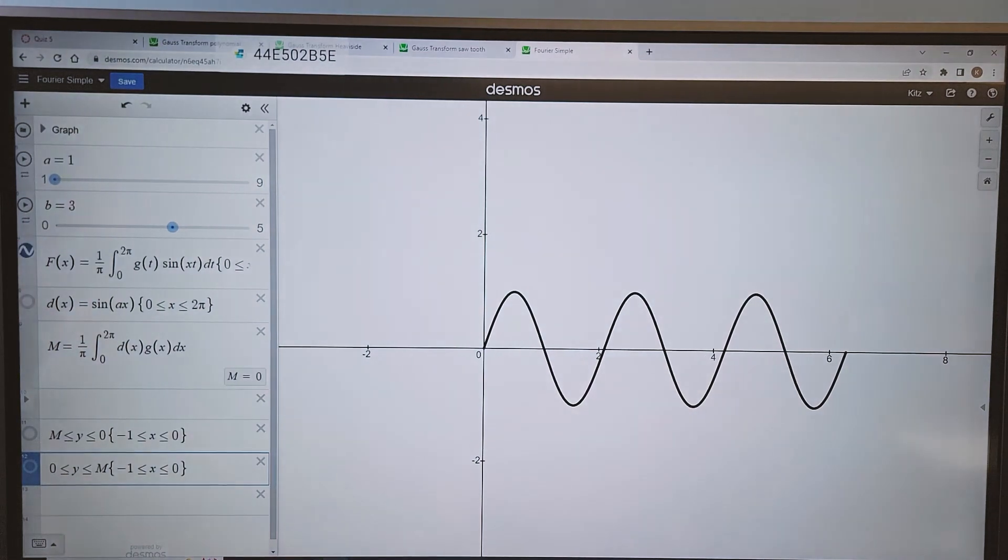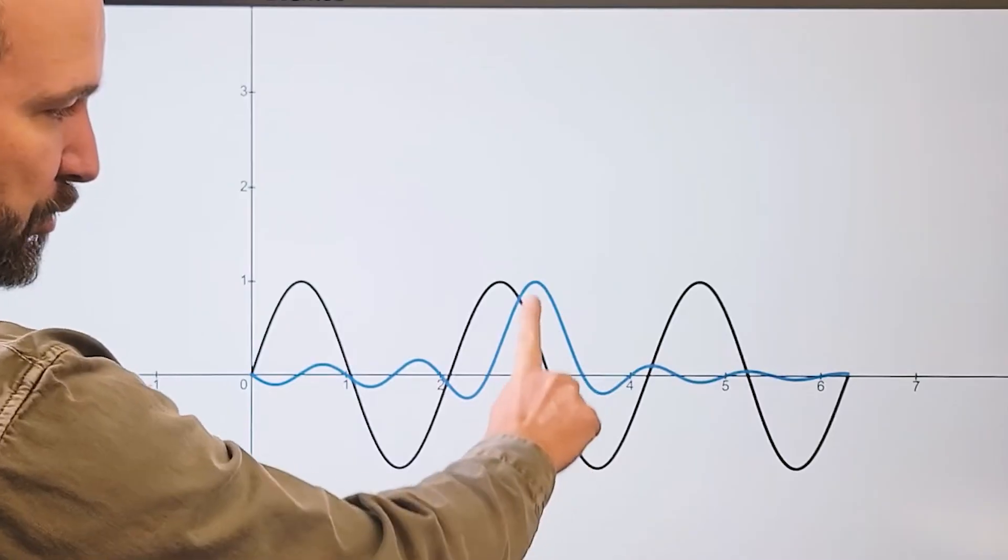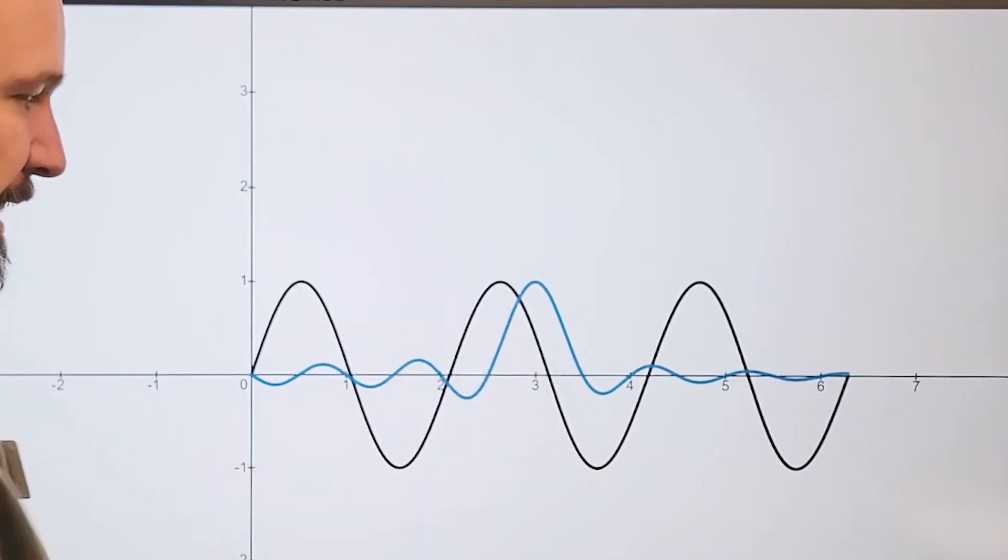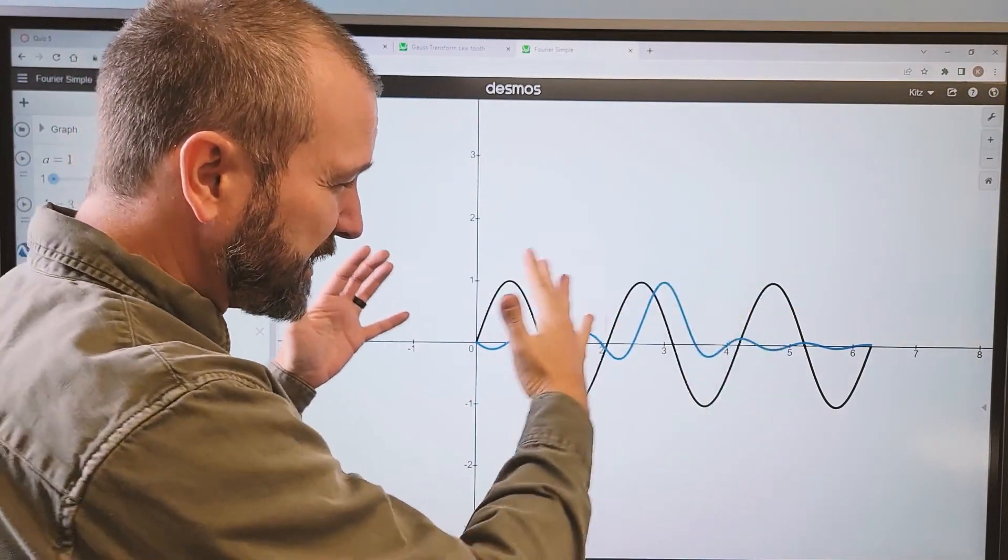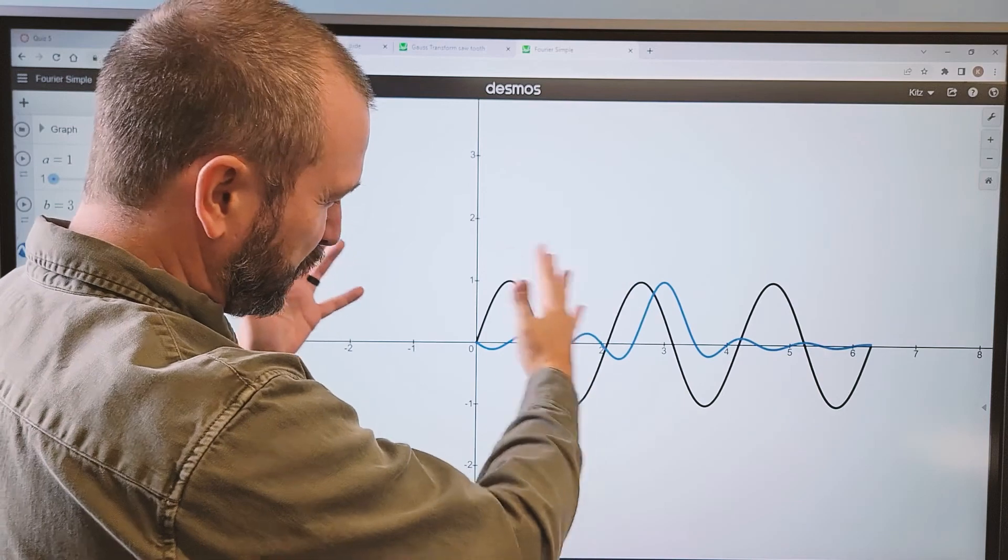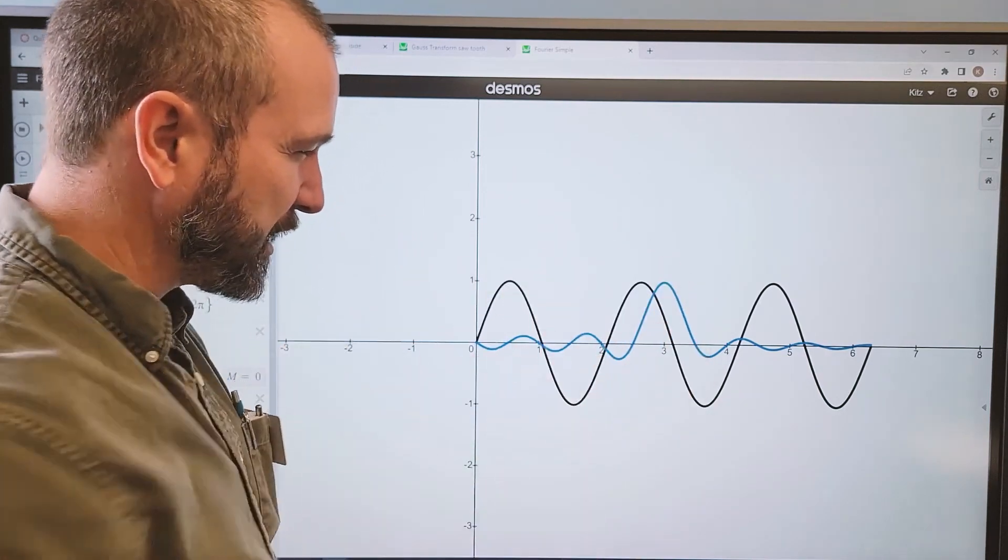And then when I pull up the Fourier transform of this wave, so right there at the number three, I get a spike because the total mass was the largest when the density curve and the actual wave curve lined up perfectly.